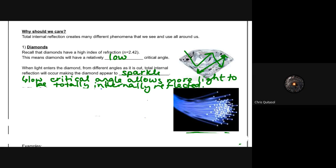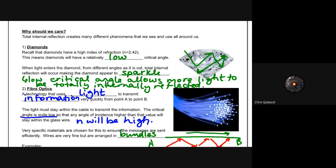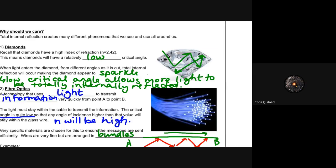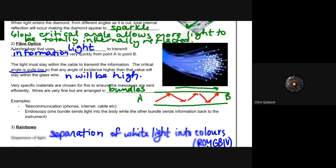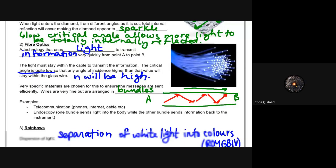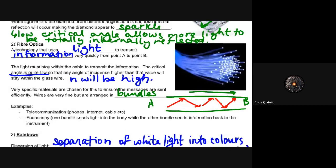So that's one application that we utilize as a species. The second one, which is more for the technological components of our lives, is fiber optics. So fiber optics is a technology that uses light to transmit information very quickly from one point to another. The light must stay within the cable to transmit the information.